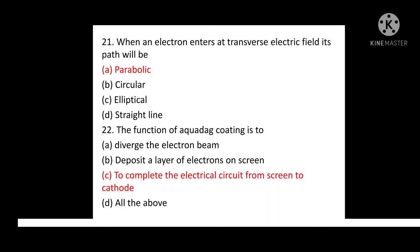Question No. 22: The function of aquadag coating is to? Option A: Diverge the electron beam. Option B: Deposit a layer of electrons on screen. Option C: To complete the electrical circuit from screen to cathode. Option D: All of the above. Correct answer is: To complete the electrical circuit from screen to cathode.